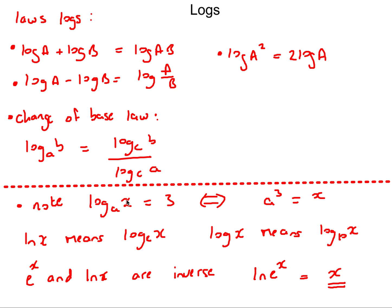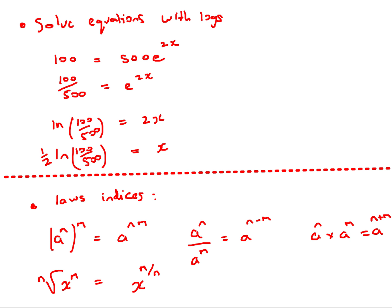A reminder: ln is log base e, and log with no base written is log base 10. It's worth bearing in mind that e^x and ln x are inverse functions, so f⁻¹(f(x)) = x by the definition of an inverse function. Now let's look at some questions.